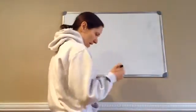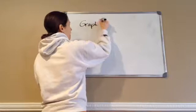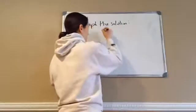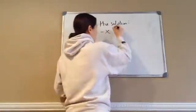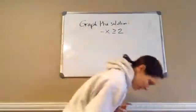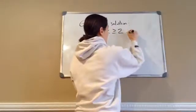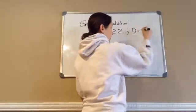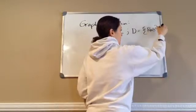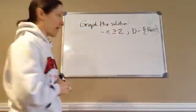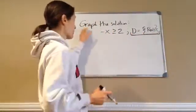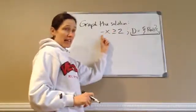So this is example 91.1. It tells me to graph the solution. The solution given is: negative x is greater than or equal to 2. And then it also says the domain equals reals, meaning real numbers — that's what we're going to graph. There's a problem because we have a negative x.